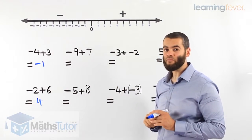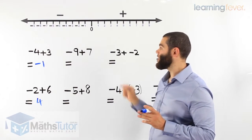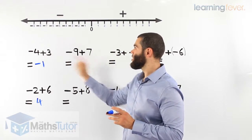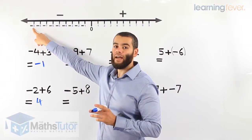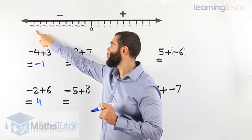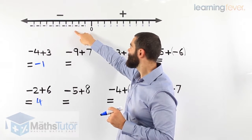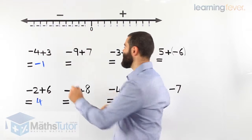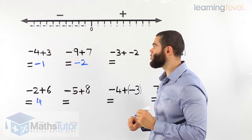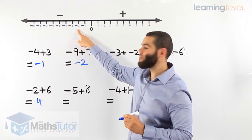Let's see if you can do this one. We start at negative 9. It says negative 9 plus 7, so we start at negative 9, we're going towards the right, and we add 7: 1, 2, 3, 4, 5, 6, 7. Our answer is negative 2. Starting at negative 9 and moving 7 times, we end at negative 2.